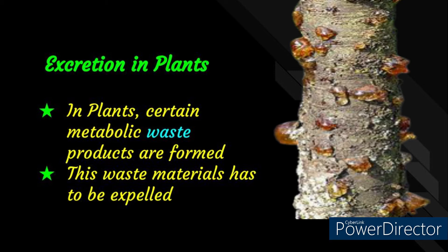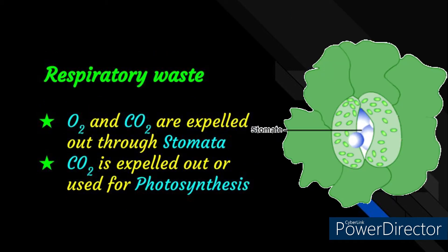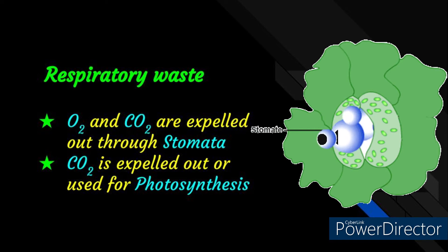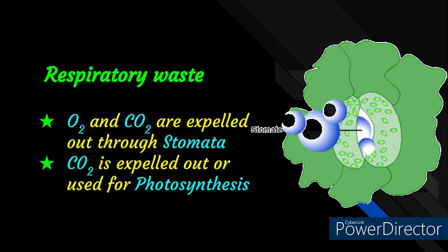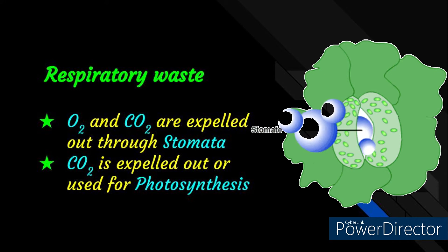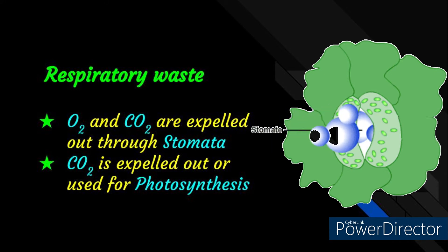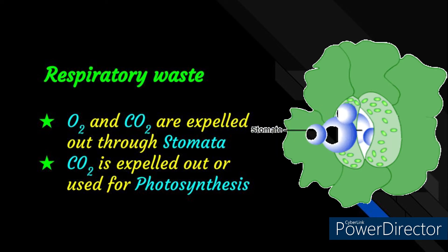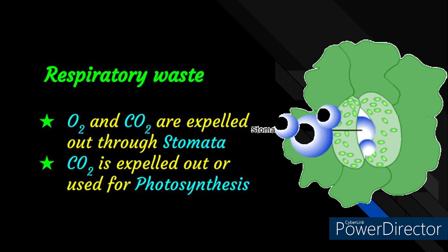The system of expelling this waste is different from animals. Photosynthetic or respiratory waste, like oxygen and carbon dioxide, are expelled out through stomata. Carbon dioxide is either utilized by plants for photosynthesis or expelled out.